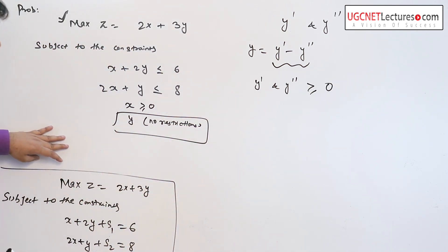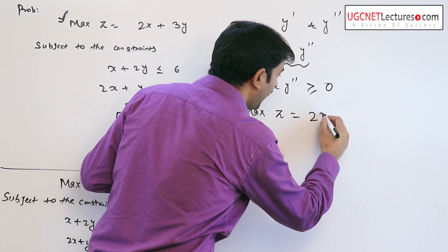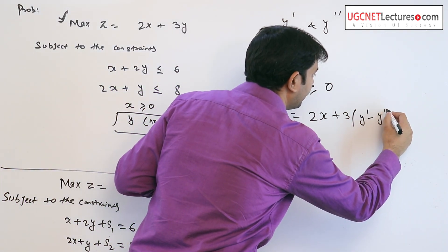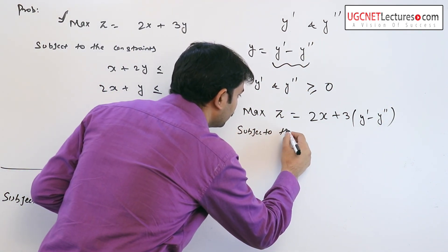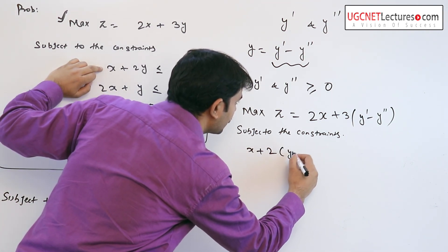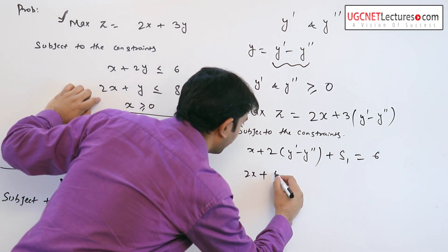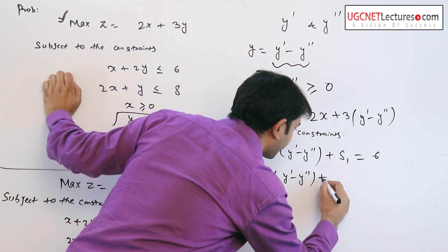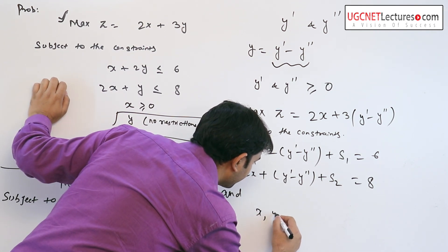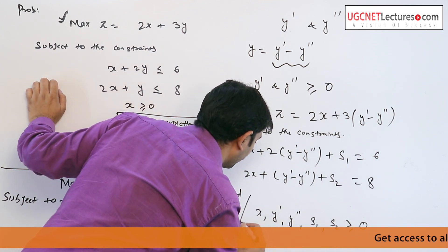So, written in standard form, the problem reduces to: maximize z equal to 2x plus 3 times (y-dash minus y-double-dash), subject to the constraints x plus 2(y-dash minus y-double-dash) plus s1 equal to 6, and 2x plus (y-dash minus y-double-dash) plus s2 equal to 8, and all decision variables x, y-dash, y-double-dash, s1, s2 are non-negative.